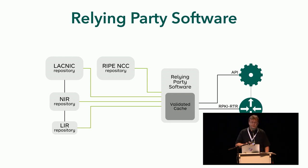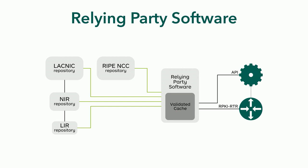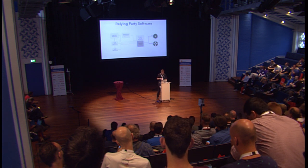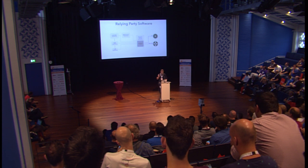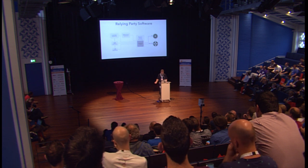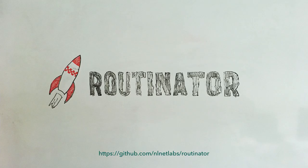We also decided to use this as a test bed for an awesome experiment: whether we can use a relatively new language called Rust to build production-ready software. So we went away, and it took about six weeks. We had something that was working. Six weeks is not a bad time. We spent another week to design a logo. And so this is the Routinator.